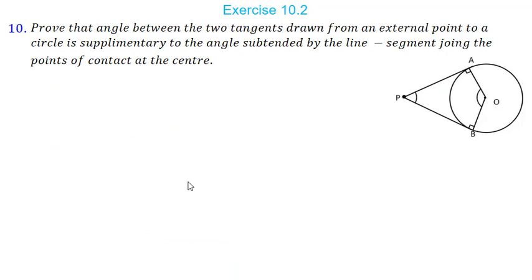The tenth question asks us to prove that the angle between two tangents drawn from an external point to a circle is supplementary to the angle subtended by the line segment joining the points of contact at the center. We have to prove that angle APB + angle AOB = 180°. Since angles at A and B are each 90° (tangent perpendicular to radius), angle A + angle B = 180°, and the sum of all four angles of quadrilateral OAPB is 360°.